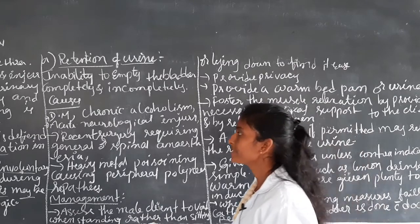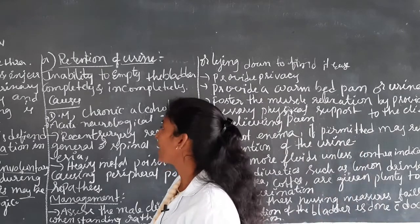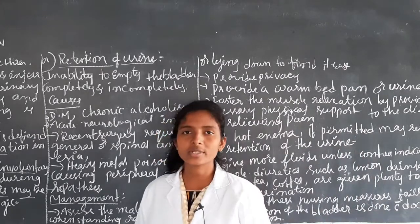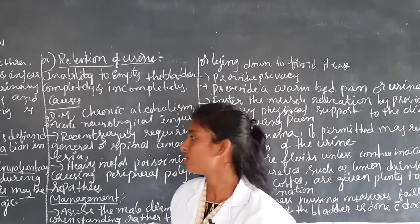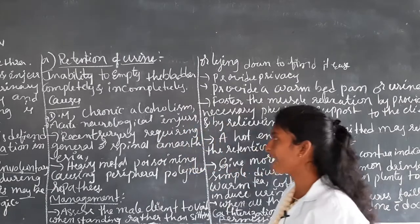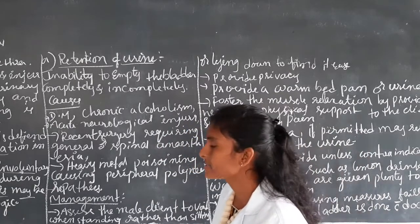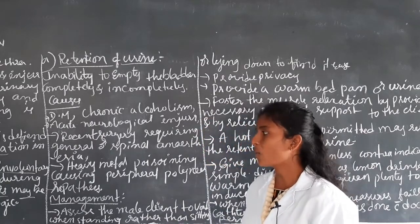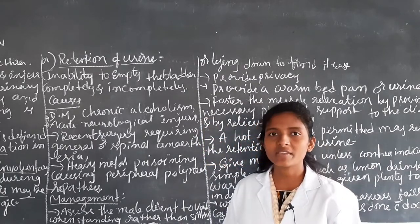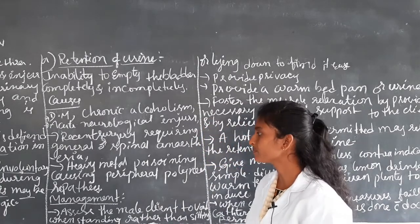Recent surgery requiring general or spinal anesthesia is another cause. And the next cause is heavy metal poisoning causing peripheral polyneuropathy.